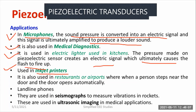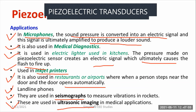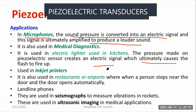Then inkjet printers — that is another application. Also in toys, where children put on shoes — whenever they are walking, there may be production of light. Piezoelectric crystals have been included in their particular shoes; whenever a child applies pressure over the shoes, electrical voltage is generated, and due to the flow of electrons, light is formed. It is also used in restaurants or airports where a person steps near the door and the door opens automatically. Then landline phones. And it is also used in seismograph, where different researchers study vibration and rocks. This can also be employed in ultrasonic imaging in biomedical applications. The contribution of piezoelectric crystal in the area of sensors and transducers is highly unavoidable.